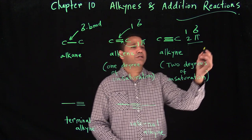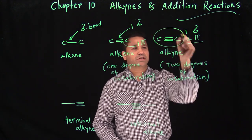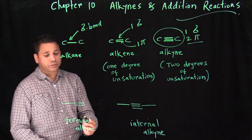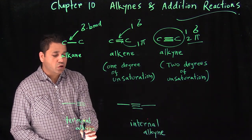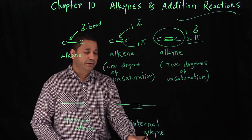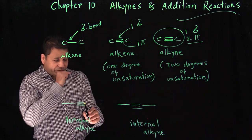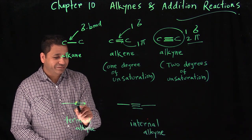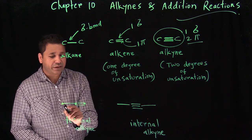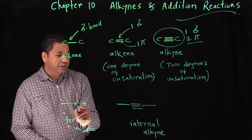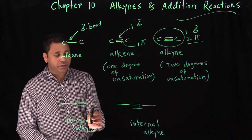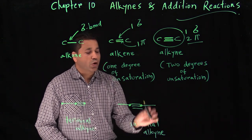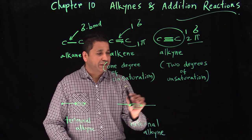In this chapter we're only talking about alkynes. Alkynes can be two different types: terminal alkyne and internal alkyne. A terminal alkyne is at the end of the chain, while an internal alkyne is within or inside the chain.